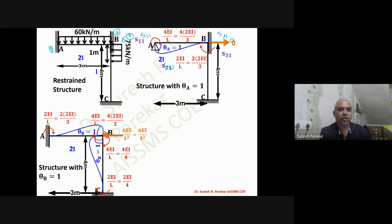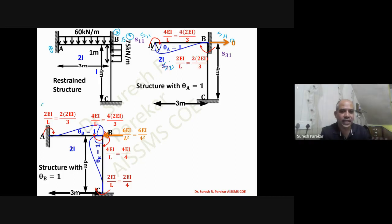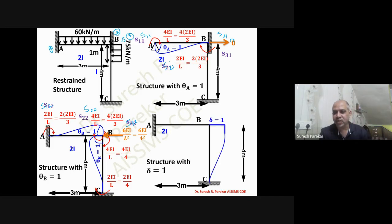The stiffness elements are labeled S at 1, S at 2 (sum of BA and BC contributions), and S at 3. Unit displacement was applied at position 2, giving elements S32, S22, and S12. Applying Δ = 1: the required moment is 6EI·Δ/L², and with Δ = 1, it becomes 6EI/4².